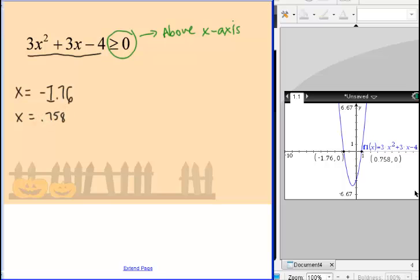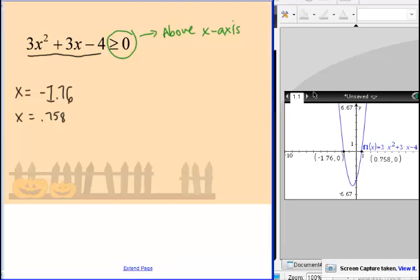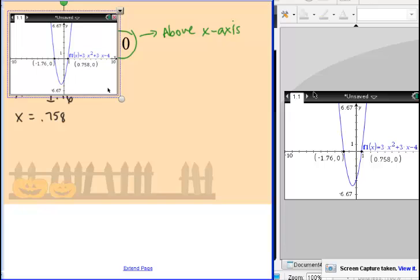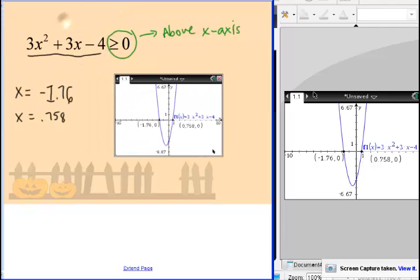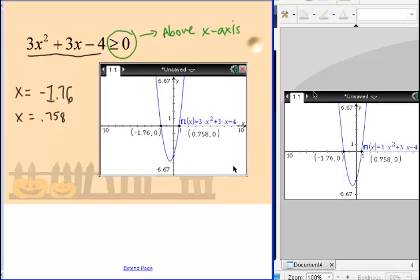Now, the part of the graph that we're really interested in is the part of the graph that's above the x-axis. Let's look at this. Here's my graph. We're really interested in the part of the graph above x, this part that's up here above x. Where does this graph go above x?